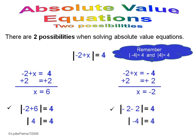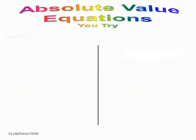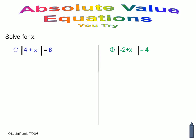You should always check your work to make sure that you have done it right. Here are two problems for you to try. Remember that you have to set up two equations — one without the bars just the way it is, and one giving you a negative result.